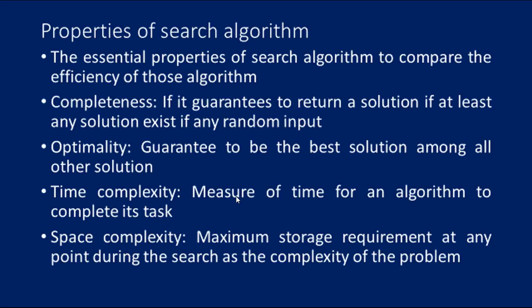Let us see what are all the properties that need to be considered for a searching algorithm. There are four essential properties of a search algorithm to compare the efficiency of the algorithm: completeness, optimality, time complexity, and space complexity. These are the essential properties used to compare the efficiency of algorithms. If there is a comparison, only then can we identify the efficiency. Completeness — a search algorithm is said to be complete if it guarantees to return a solution, if at least any solution exists for any random input.